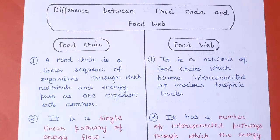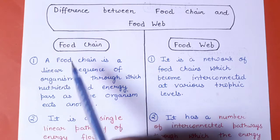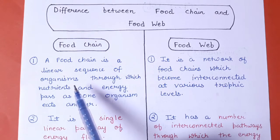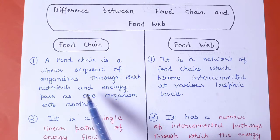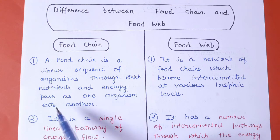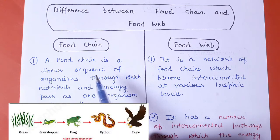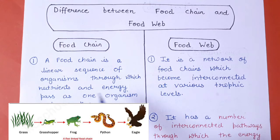Hello everyone, welcome to my channel all about biology. I am Jyoti Varma. Today we will discuss the difference between the food chain and the food web. A food chain is a linear sequence of organisms through which nutrients and energy pass as one organism eats another, in a straight linear way.